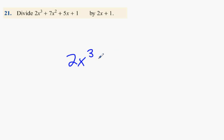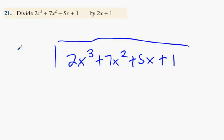2x cubed plus 7x squared plus 5x plus 1. Then divide it by 2x plus 1.